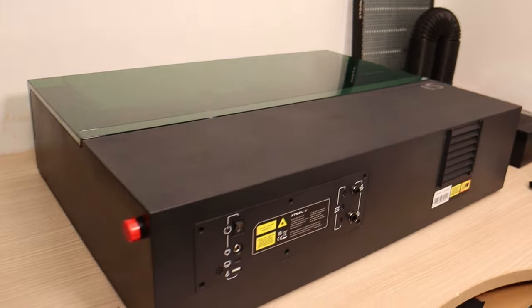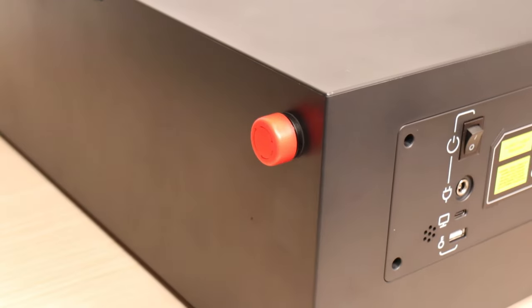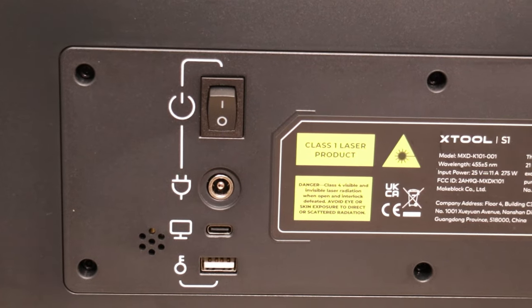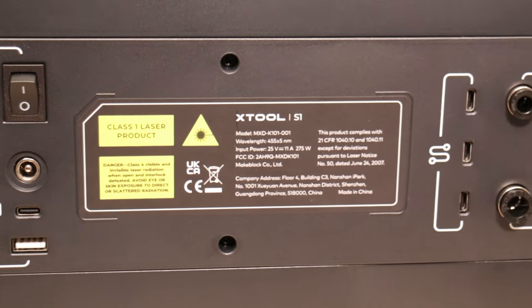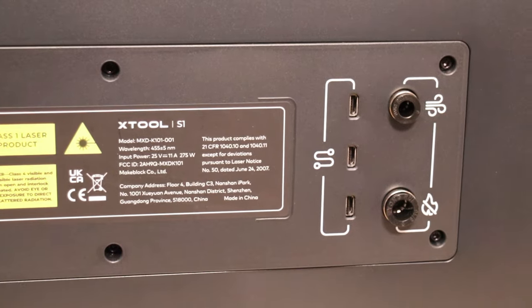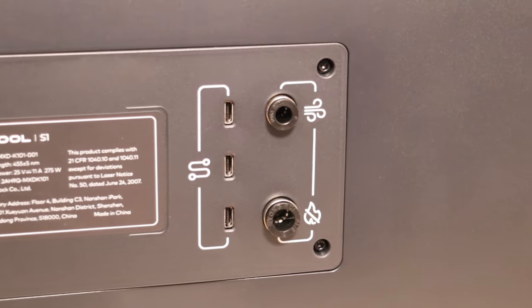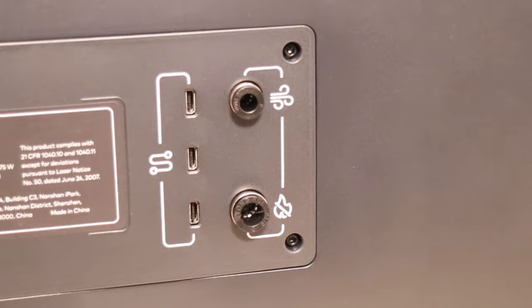On the side, you have the emergency stop switch, and on the back side, there is a connection panel for interfacing the machine with a computer and connecting all the attachments like RA2 rotary chuck attachment or the conveyor feeder. It also has an air assist inlet and port for connecting the fire extinguishing system.